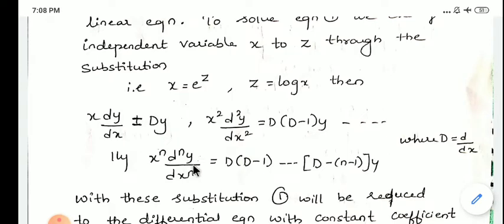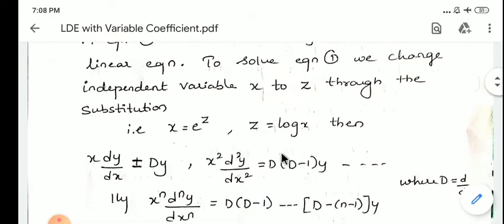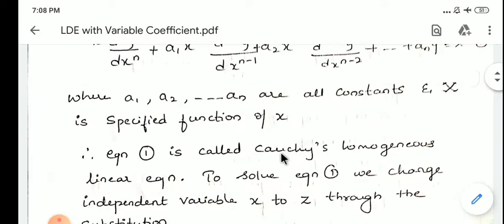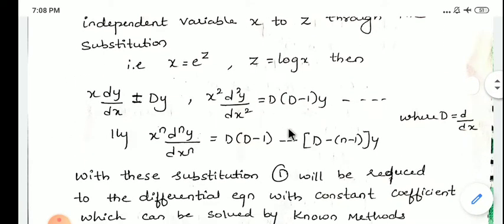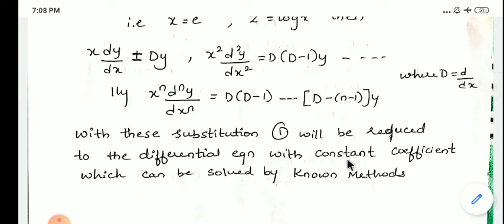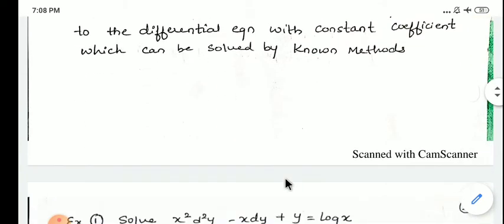Similarly, the nth term x^n (d^n y/dx^n) = D(D-1)(D-2)...(D-n+1)y. With all these substitutions in equation 1, it will be reduced to a differential equation with constant coefficients, which can be solved by Cauchy's method.